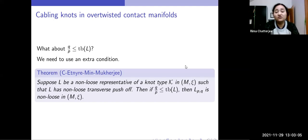And I should mention here that not every non-loose Legendrian has a non-loose transverse push-off. An example would be the unknot. So if a non-loose Legendrian knot has a non-loose transverse push-off, then all of its cables will be non-loose.